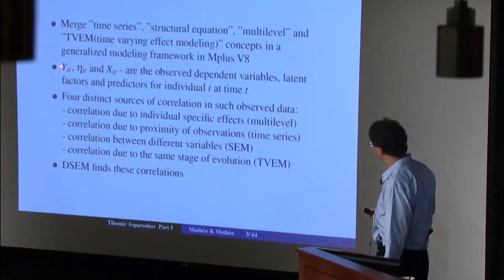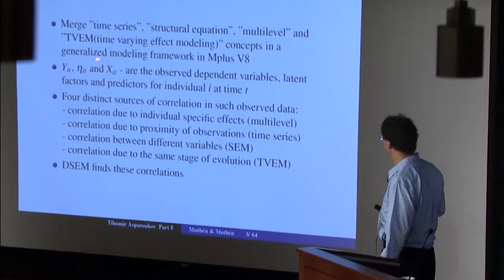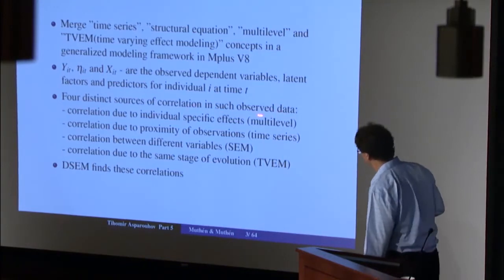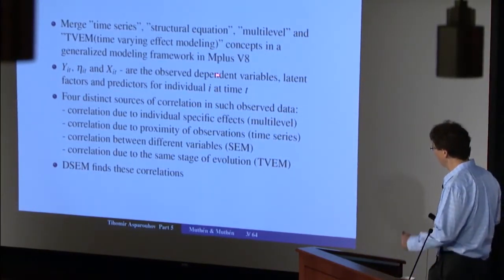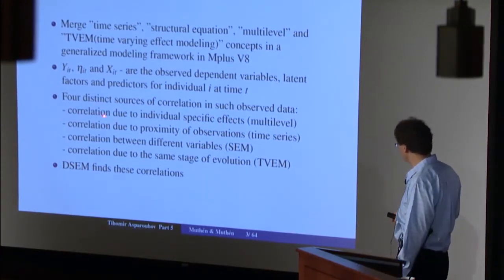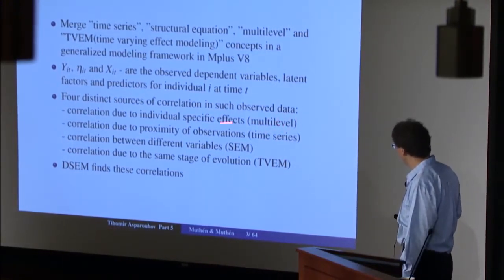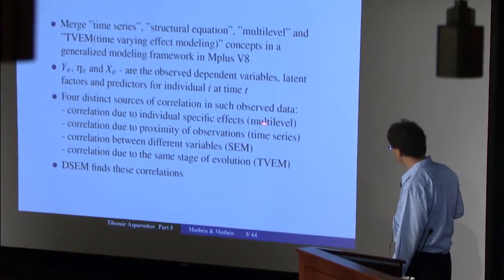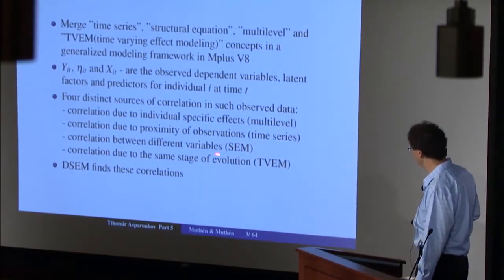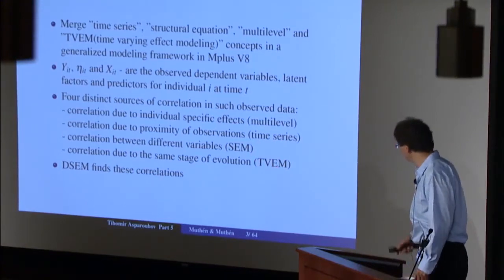The setup here is that we have dependent variables Y_it, eta_it, and X_it — the dependent, latent, and covariate variables for individual i at time t. In such data, there are four distinct sources of correlations that the descent framework allows you to parse out. These are: correlations due to individual-specific effects (the multilevel aspect), correlations due to proximity of observations (the time series aspect), correlations between different variables (the SEM part), and correlations due to the same stage of evolution, which is the time-varying effect modeling framework.